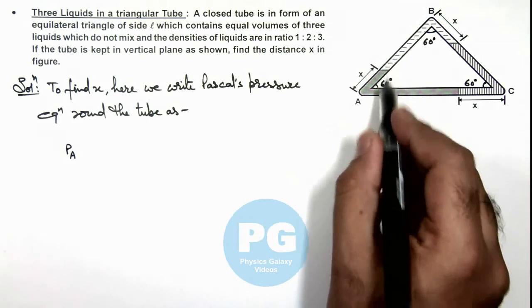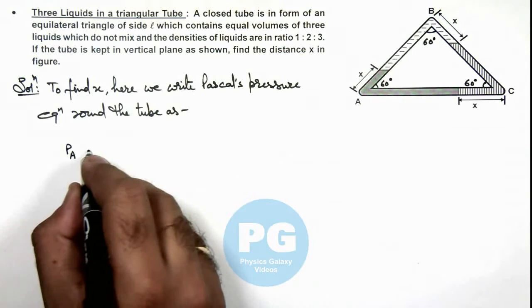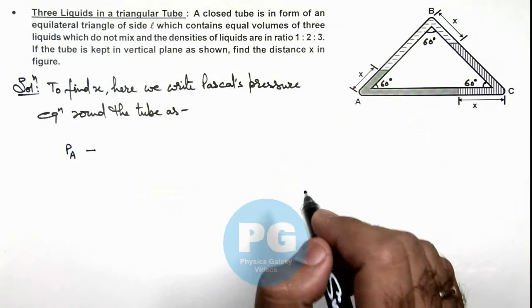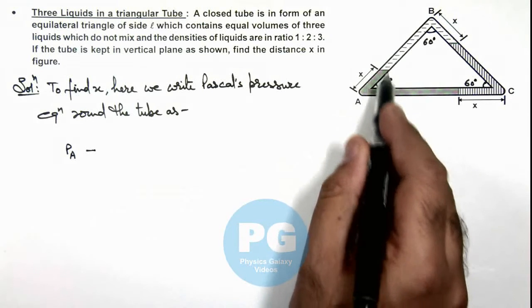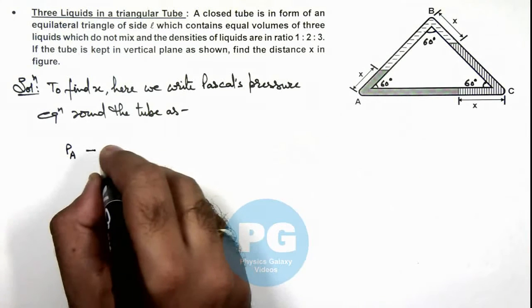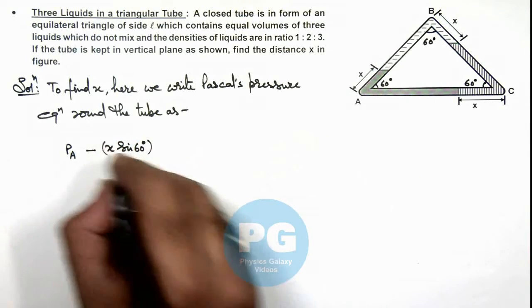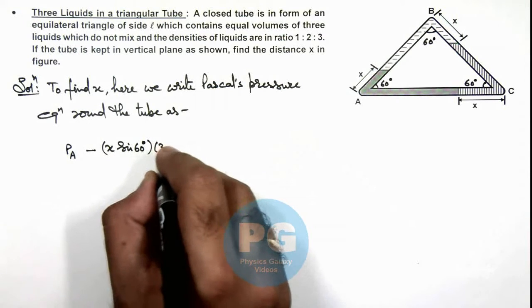If we are going up, at this point pressure will be less, so we subtract h·ρ·g. Its height we can write as x·sin(60°), so we can write x·sin(60°) multiplied by 3ρ·g.